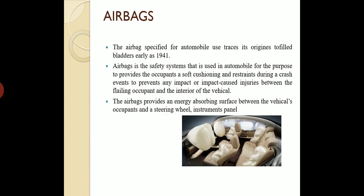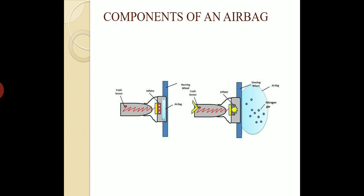Airbags. The airbag is specified for automobile use. It was originally developed in 1941. An airbag is a safety system used in automobiles to prevent occupant injuries. It provides a soft cushioning resistance during a crash event to prevent impact-caused injuries between the occupant and other parts of the vehicle. The airbag provides an energy-absorbing surface between the vehicle and the occupant, including the steering wheel, equipment, instruments, and panels.